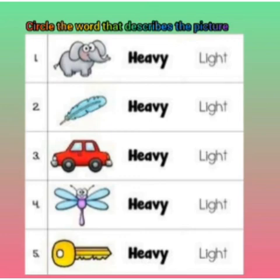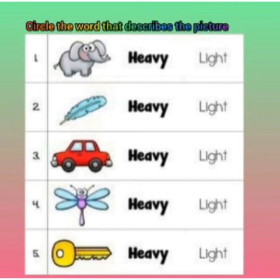If the elephant is heavy, you will circle 'heavy.' What about the feather? The feather is light, so you will circle 'light.' The car is very heavy, so you will circle 'heavy.' What is the butterfly? The butterfly is light, so you will circle 'light.'